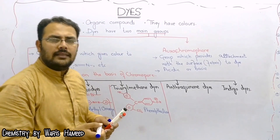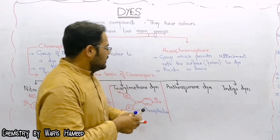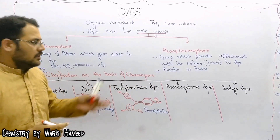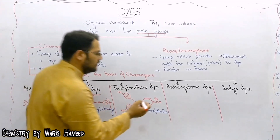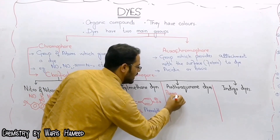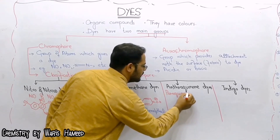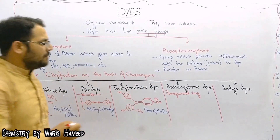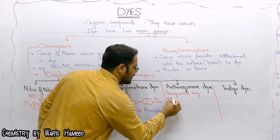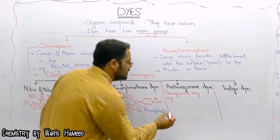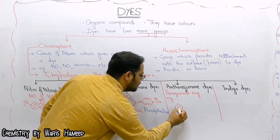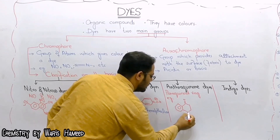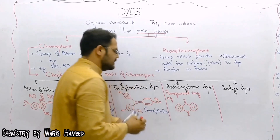Next is anthraquinone dyes. In the case of anthraquinone dyes, the chromophore is the paraquinoid ring. The paraquinoid ring is actually the chromophore in such type of dyes. For example, alizarin is a good example of anthraquinone dyes — there is a first benzene ring, then the paraquinoid ring, and then a second benzene ring.